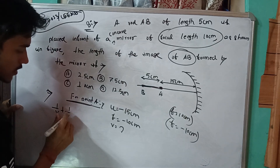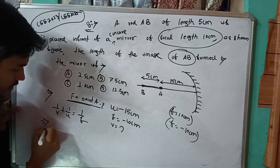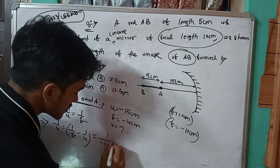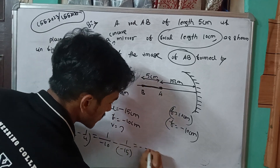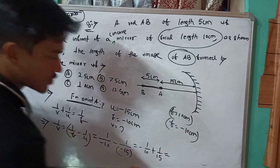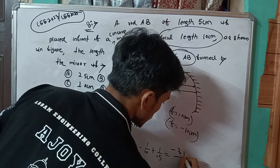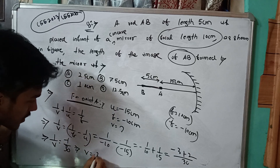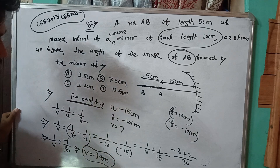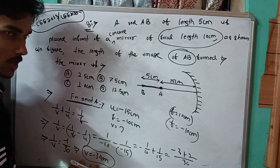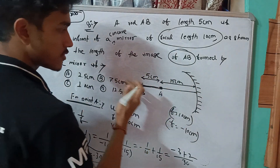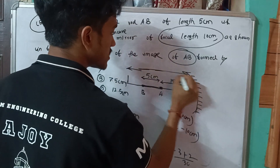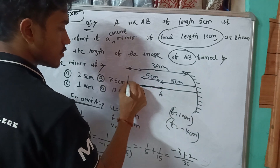Using the formula: 1 by V plus 1 by U equals 1 by F, so 1 by V equals 1 by F minus 1 by U. With F equals minus 10 and U equals minus 15: 1 by V equals minus 1 by 10 plus 1 by 15 equals minus 3 plus 2 over 30 equals minus 1 by 30. So V equals minus 30cm. Therefore image of point A is at minus 30cm.